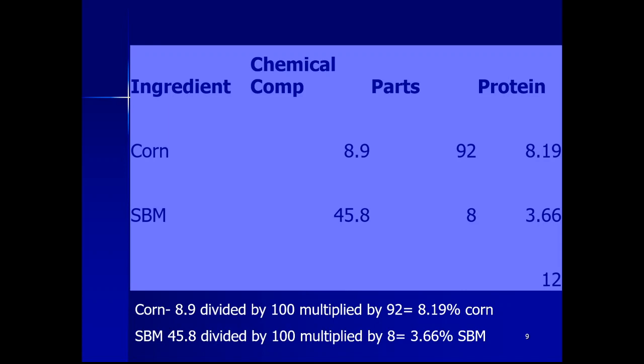When you have these parts, you can calculate how much energy, calcium, or other nutrients are available when mixing 92 parts of corn and 8 parts of soybean meal. However, the result may not always meet all nutrient requirements — that is a key limitation of this method. For mineral deficiencies like calcium or phosphorus, you can add supplemental materials such as limestone for calcium or dicalcium phosphate for phosphorus.